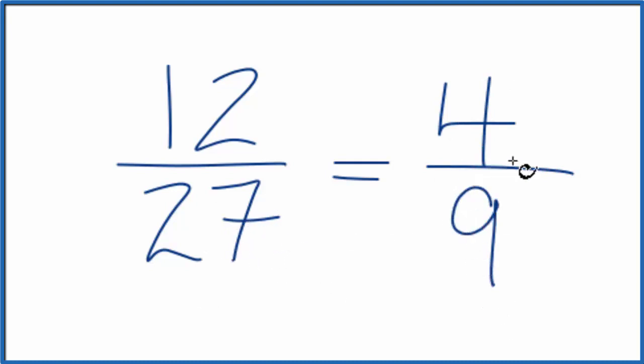And we end up with this fraction 4/9. We can't reduce or simplify this any further. So this is what we get when we reduce or simplify 12/27 down to its lowest form, 4/9.